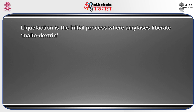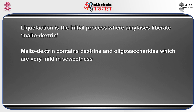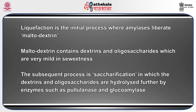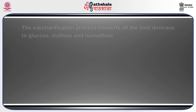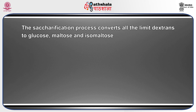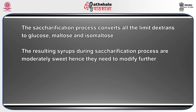Liquefaction is the initial process where amylases liberate maltodextrin, which contains dextrins and oligosaccharides with very mild sweetness. The subsequent process is saccharification, in which the dextrins and oligosaccharides are hydrolyzed further by enzymes such as pullulanase and glucoamylase. Saccharification converts all the limit dextrins to glucose, maltose, and isomaltose. The resulting syrups are moderately sweet, hence the need to modify further.